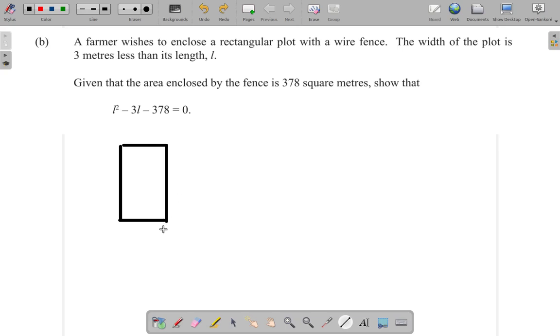Say this is the plot. And the width of the plot is 3 meters less than its length L. Let's call across here the width. So this is width and up here the length. So the length is L, all the way from here to here is L.